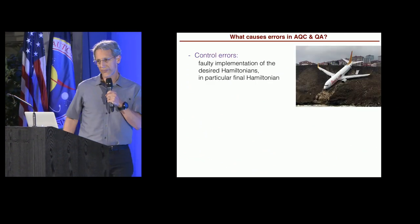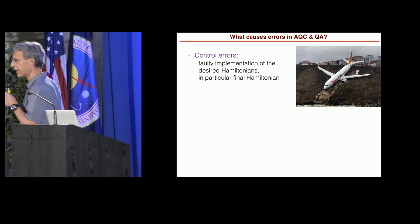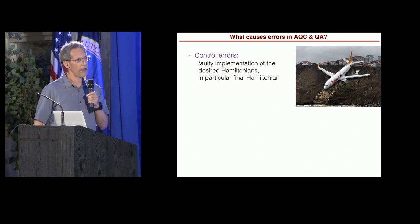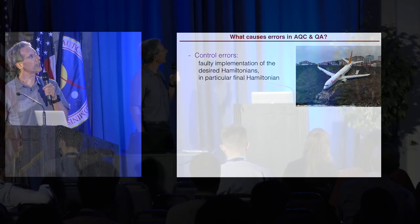Okay, so my favorite topic: errors in quantum annealing, computing and adiabatic quantum computing. And there are a bunch of different sources of errors out there. Control errors can be particularly severe. In our context, they refer to faulty implementations of the desired Hamiltonian, particularly the final Hamiltonian. That's one type, which I'll talk about.